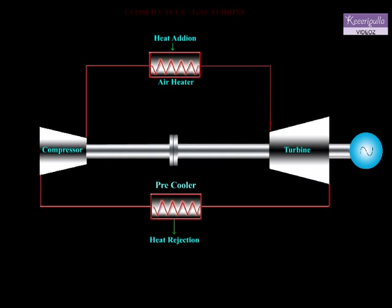A pre-cooler is used to cool the air before it enters the compressor. The compressed air from the compressor passes through a heat exchanger and receives heat from the exhaust gases of the turbine.